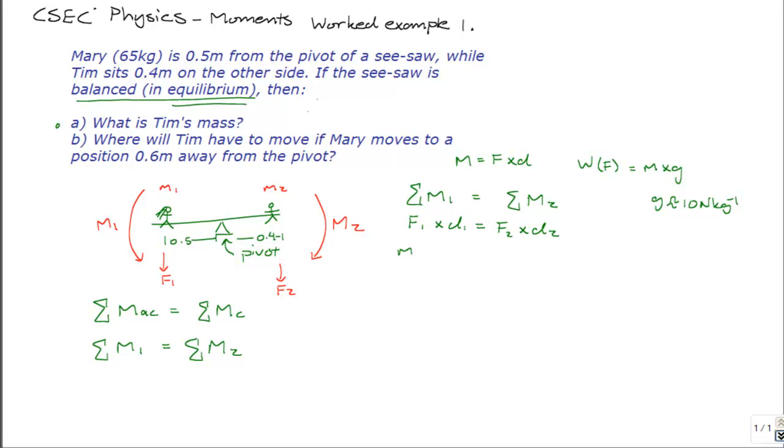So, Mary's mass, M1, times G, will be multiplied by D1, the distance from the pivot, will be equal to Tim's mass, M2, times G, times his distance from the pivot. Notice that G, the gravitational acceleration, appears on both sides of this equation, so it can actually be left out, or cancelled, from both sides. I'm going to stick with leaving G in the equation for now, but I'll show you a little later how it actually cancels out.